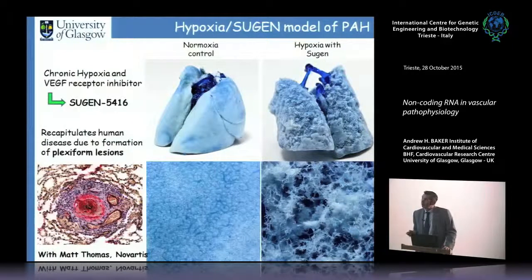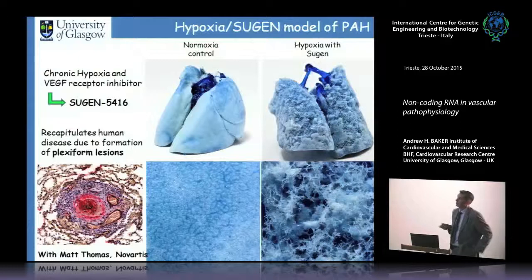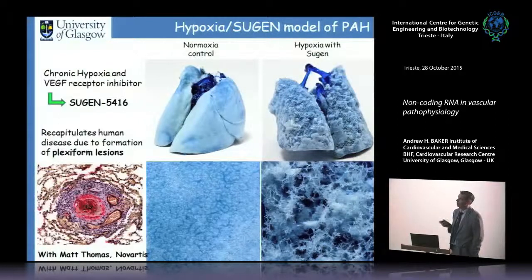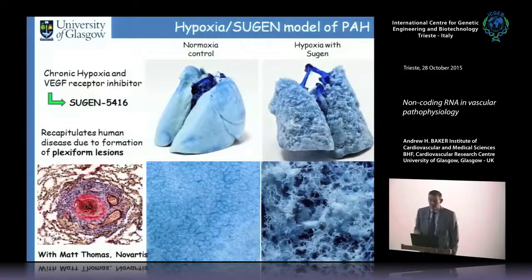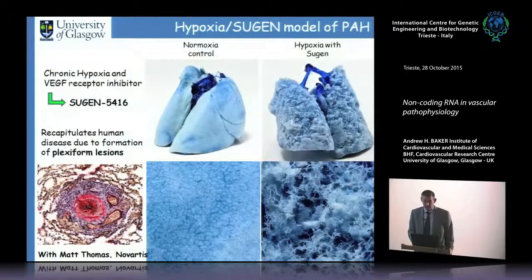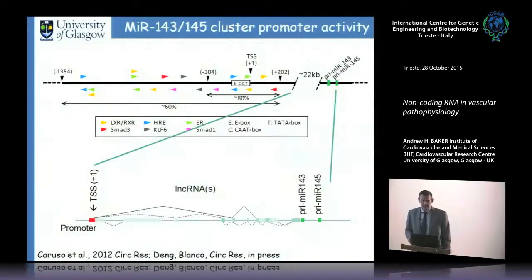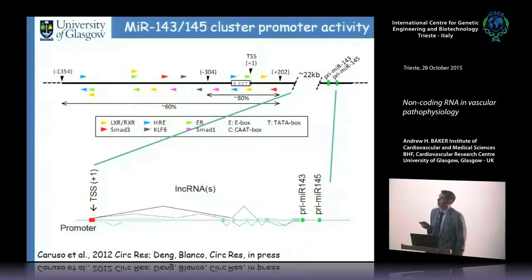On a more clinical note, we're very interested in pulmonary hypertension. In a rat model using hypoxia and Sugen, you see vascular pruning very similar to patients: profound constriction of small vessels in the lung. We've focused a lot on the microRNA-143/145 axis. We've mapped the promoter 22 kilobases upstream from the stem loops of miR-143/145.